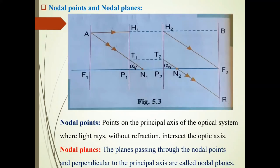Here, AN1 ray is directed towards N1 nodal point. This is the incident ray. Now after refraction through this optical system, it emerges out as N2R, which is parallel to the incident ray.